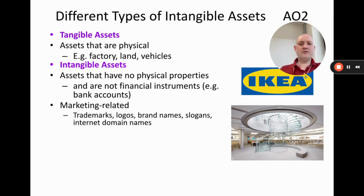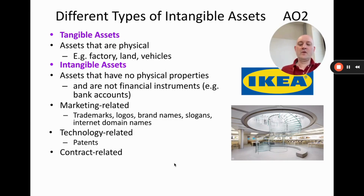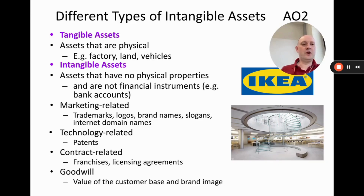Intangible assets include: marketing-related items such as trademarks, logos, brand names, slogans, and internet domain names — for example the IKEA logo, which they have copyright over. Technology-related items such as patents — a legal document giving exclusive use of an invention for a period of time, like Apple's patented staircase design in its Shanghai store. Contract-related items such as franchise and licensing agreements. And goodwill — the value of a loyal customer base, which is a genuine intangible asset.